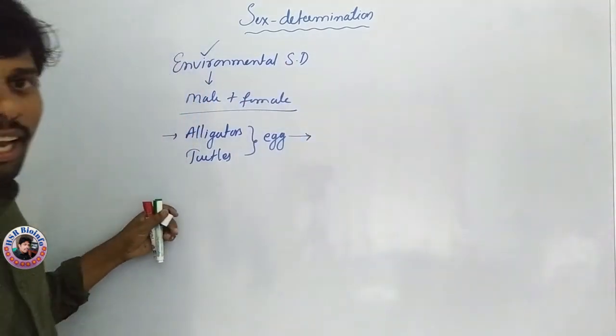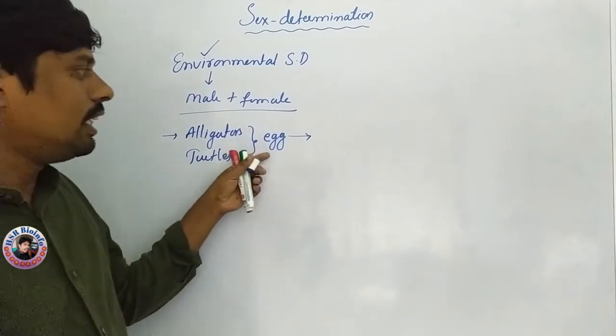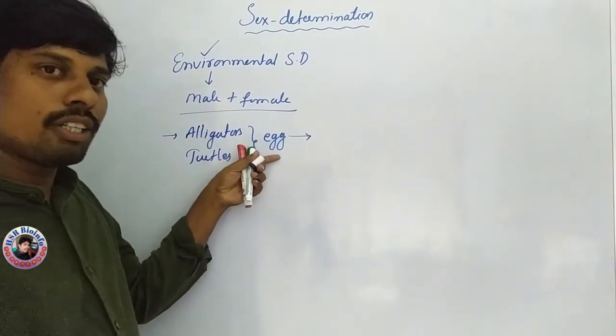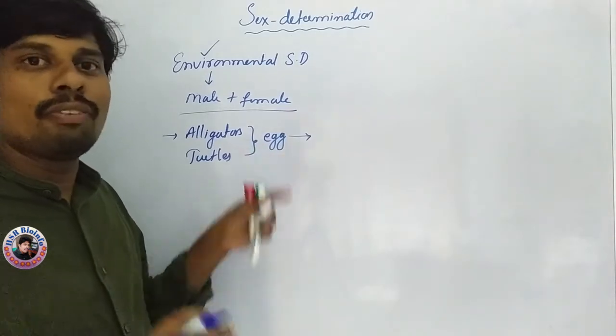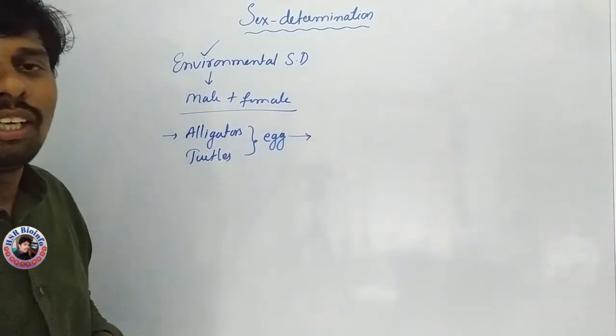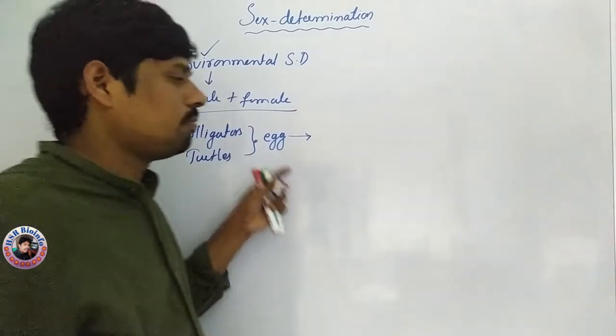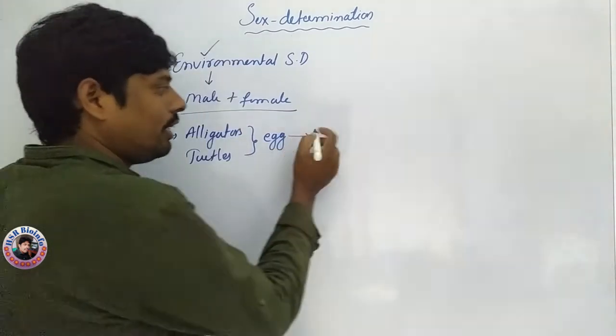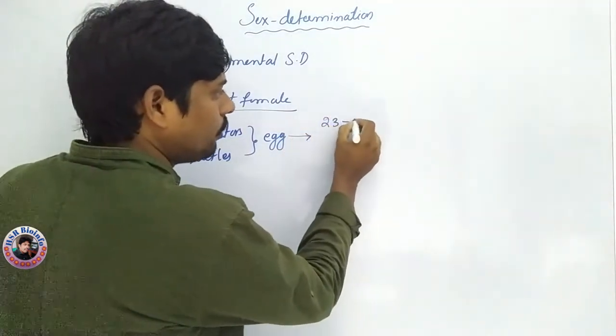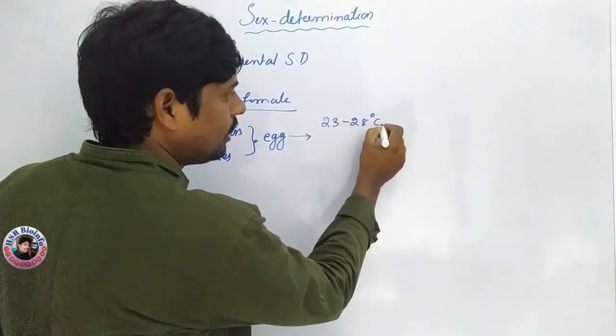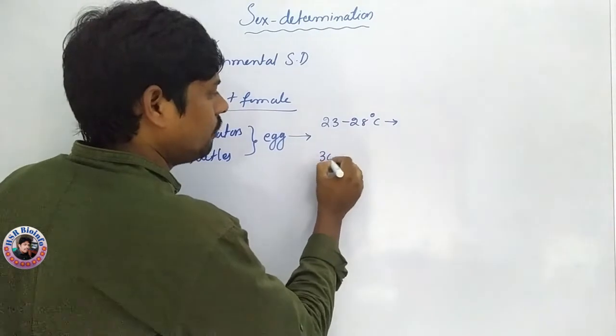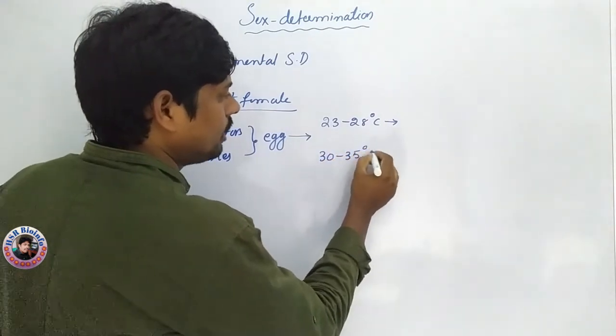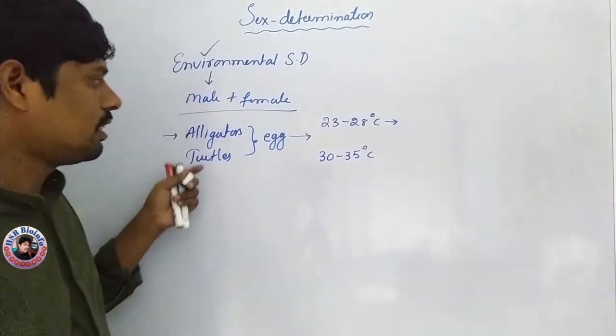At a temperature, alligators male or female. Okay. Here's the search. Now, egg is 23 to 28 degrees centigrade. Second condition is 30 to 35 degrees centigrade. For example, alligator egg laying.